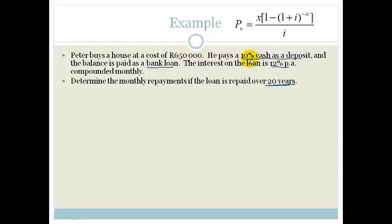So the first thing we need to realize is that Peter paid a deposit of 10% cash. So that means that 10% of his 650,000, he's already paid, which is 65,000 Rand. So that means his loan is actually going to be 650,000 minus 65,000, which is 585,000, and that is our present value.